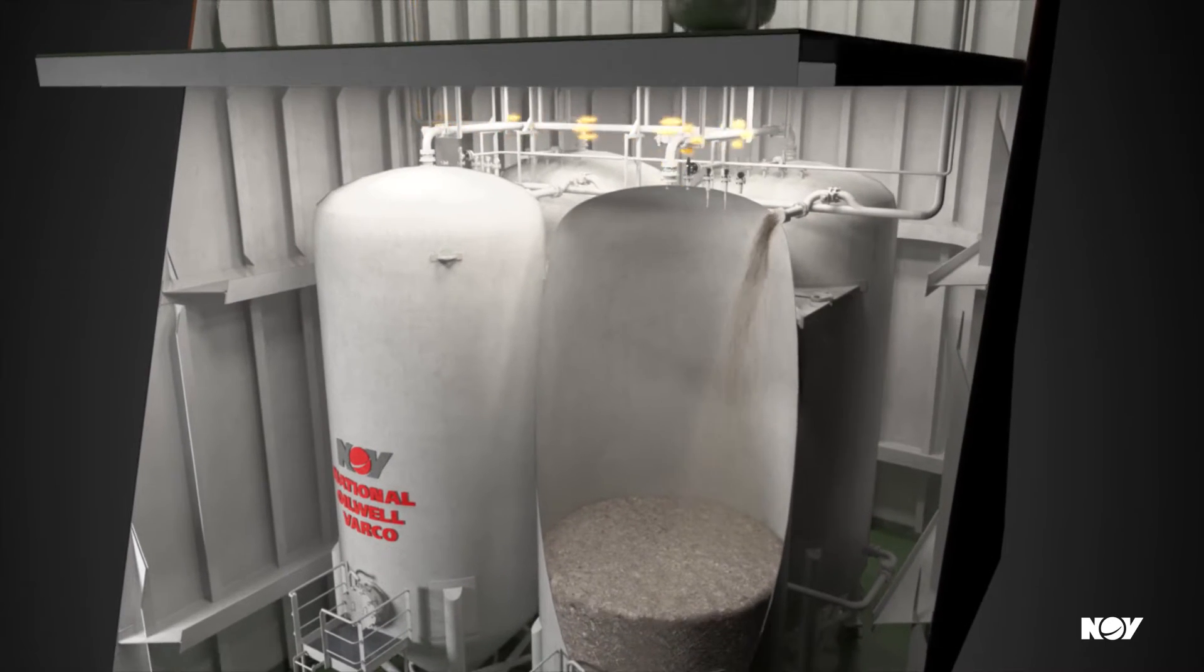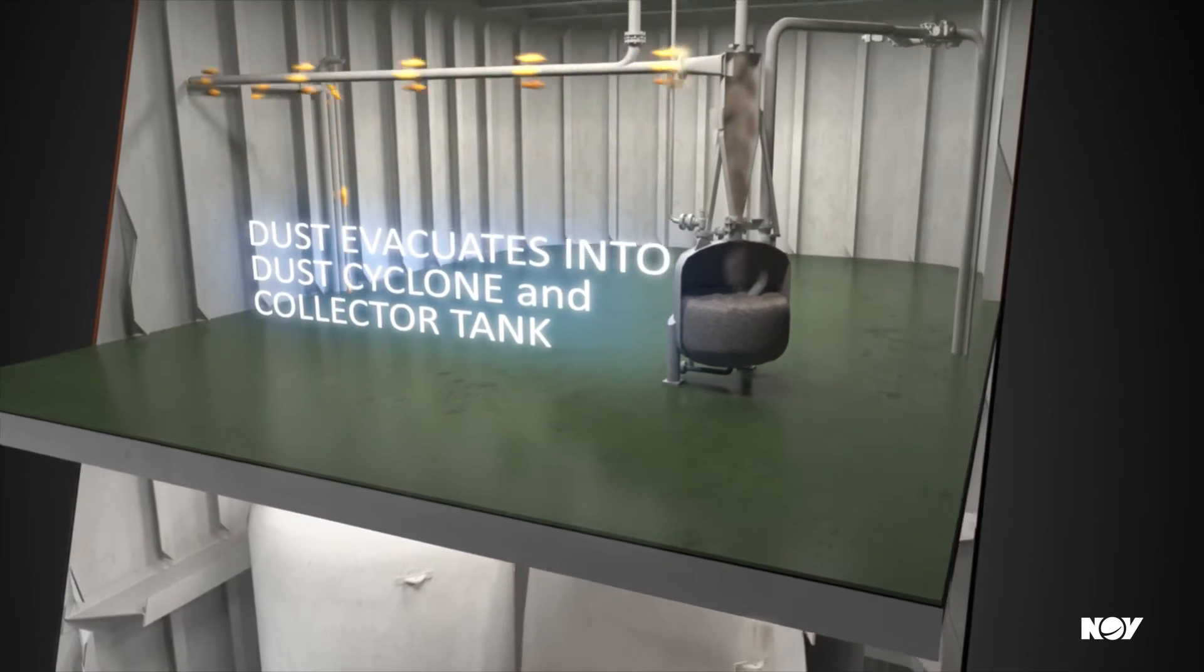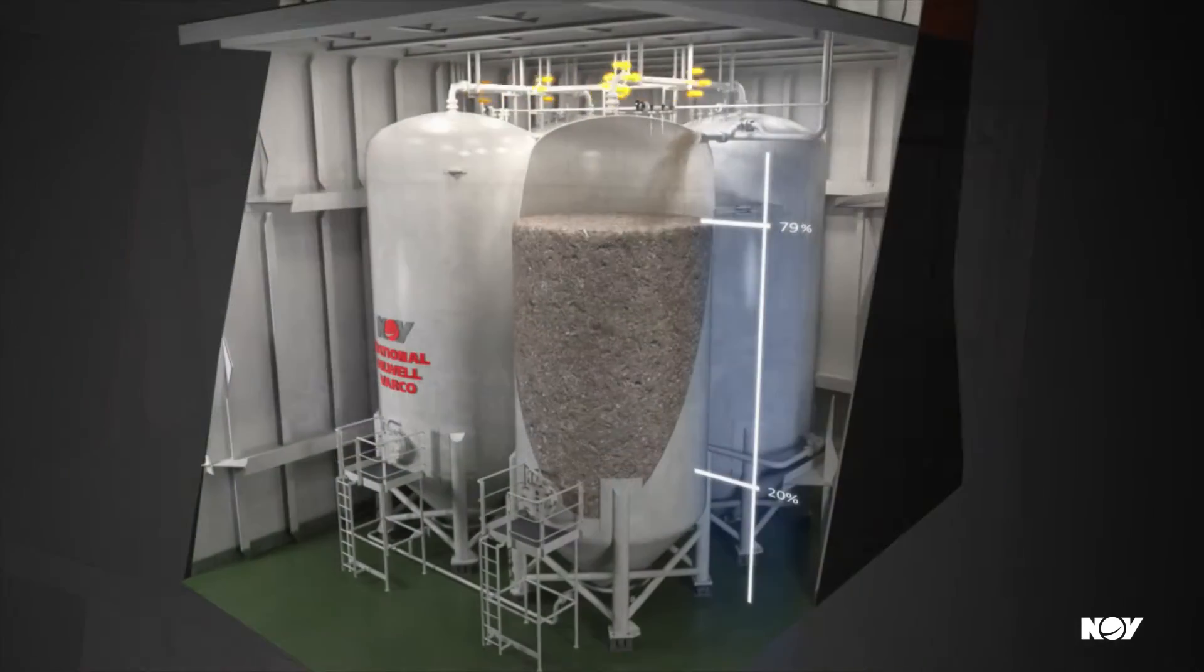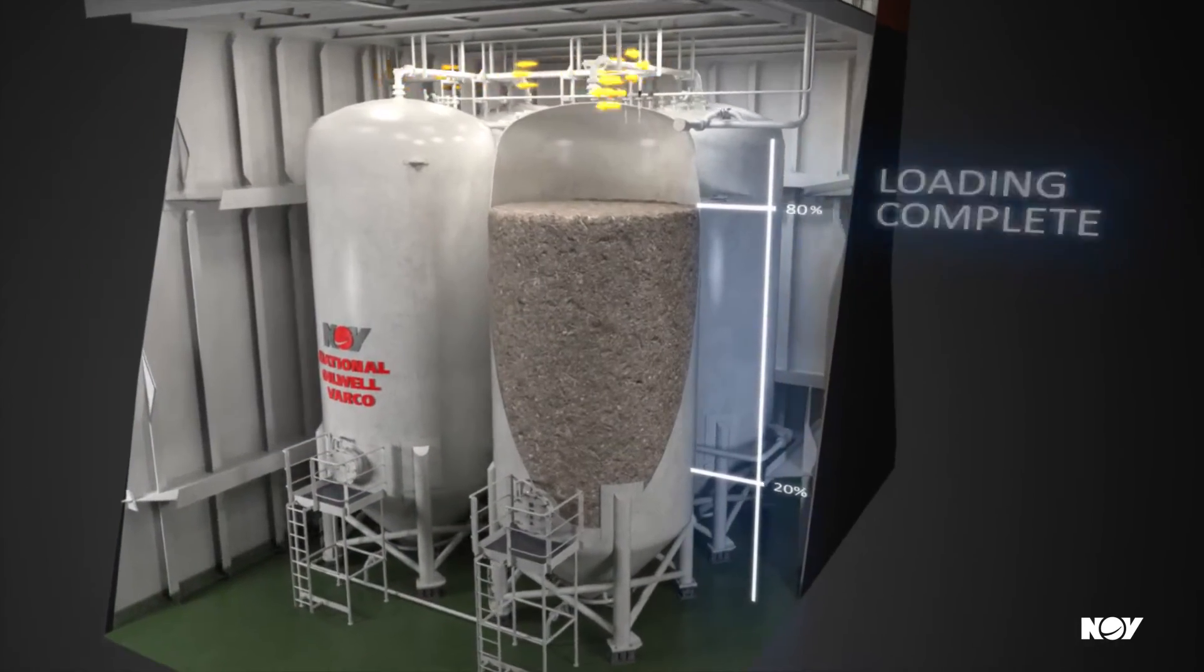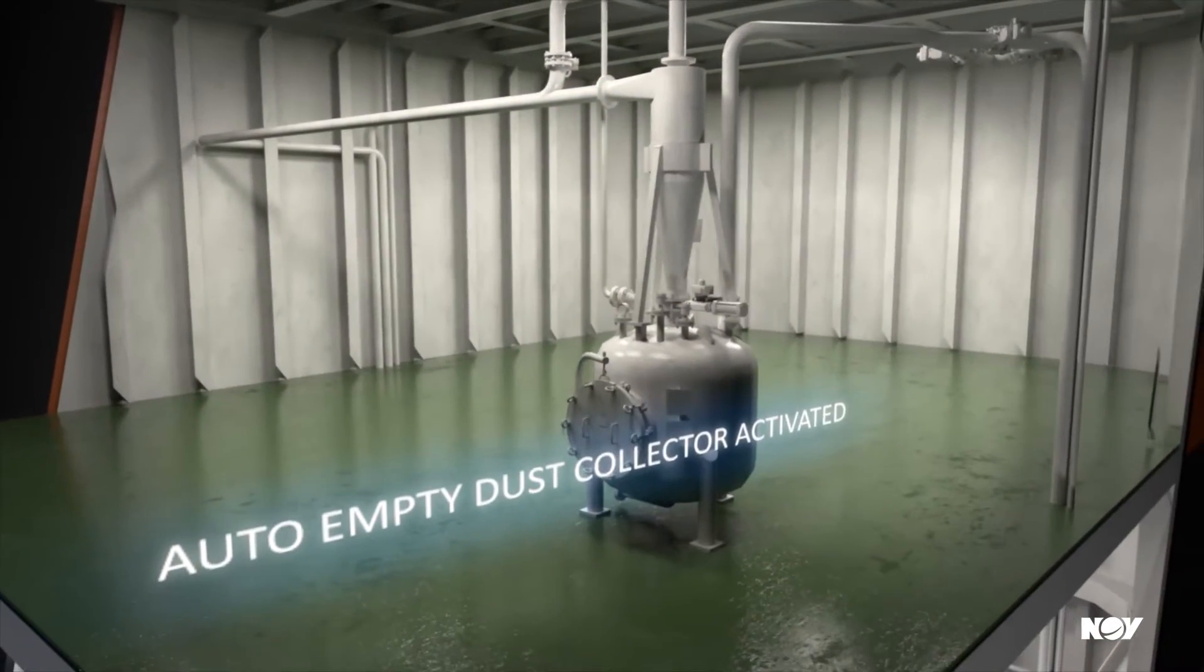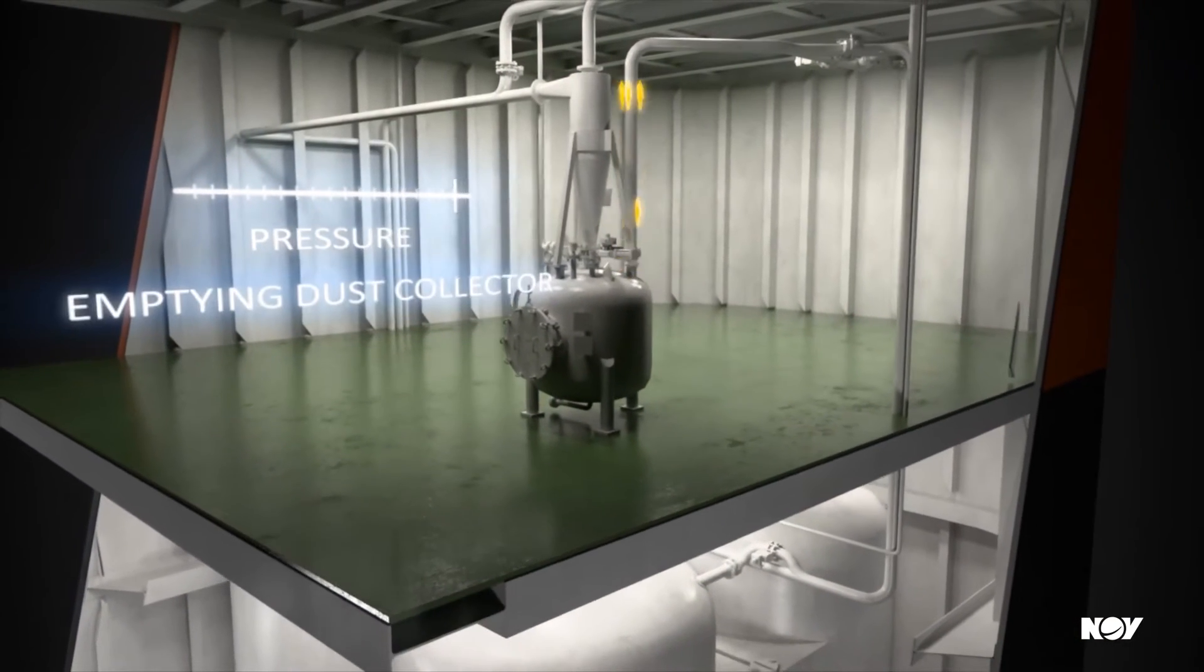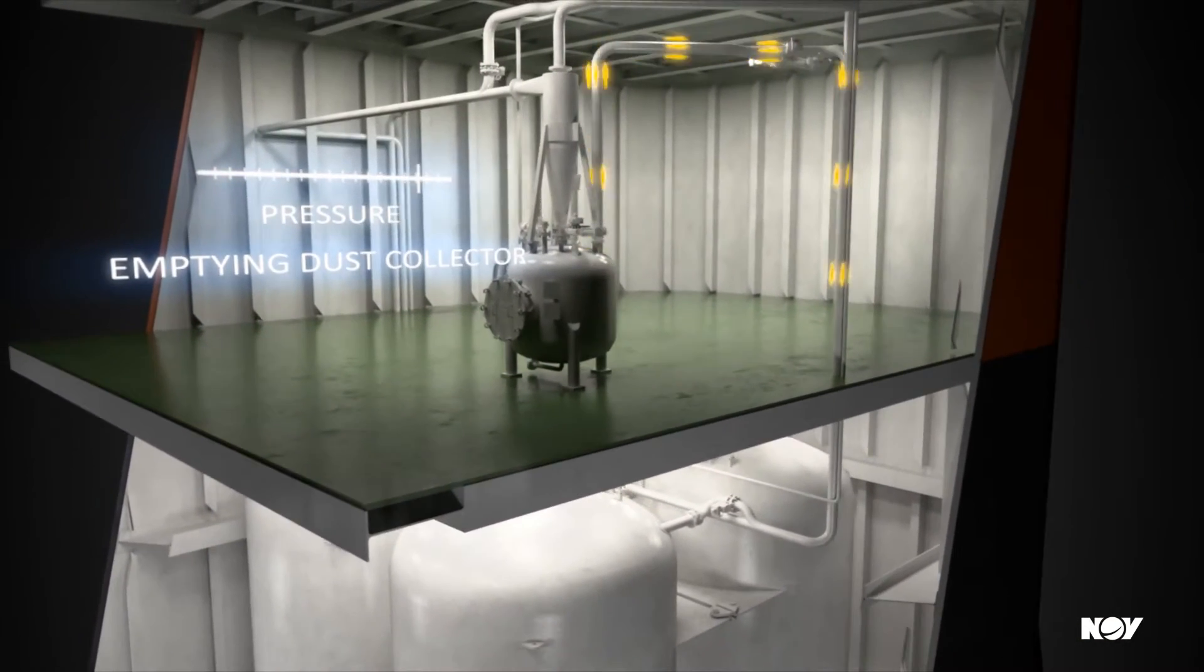The powder enters a bulk storage tank through a fill line while transfer pressure is vented through a dust cyclone for separation. After bulk loading completion, the dust collector is pressured up and the powder is transferred back to the desired storage tank.